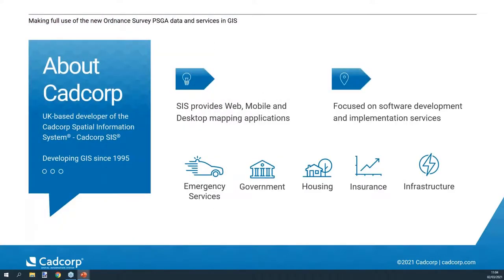We've got lots of people attending today, some of whom are brand new to CADCorp. CADCorp are a UK-based software company and we developed the Spatial Information System, CADCorp SIS, which provides desktop GIS for capturing and analyzing spatial data. It also includes web and mobile applications for sharing, visualization, and analysis of spatial information — all built using the same CADCorp core technology. This webinar is aimed at PSGA members as it relates to Ordnance Survey data available through the new OS Data Hub public sector plan.